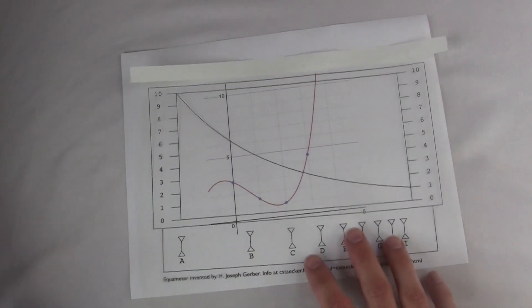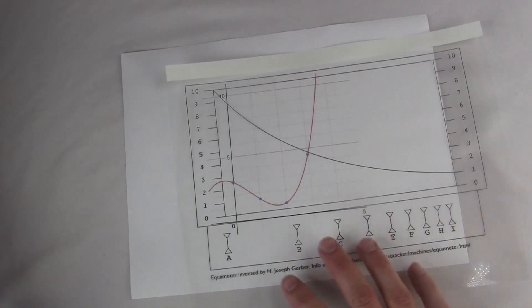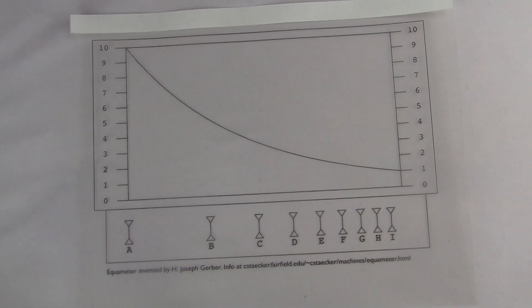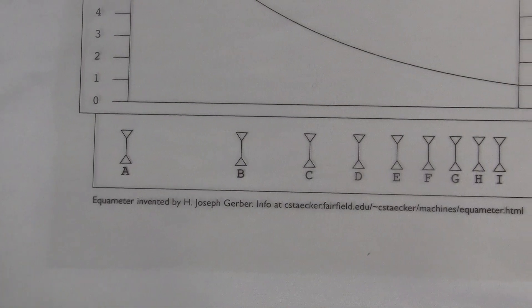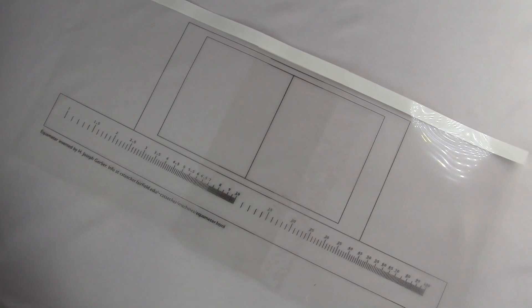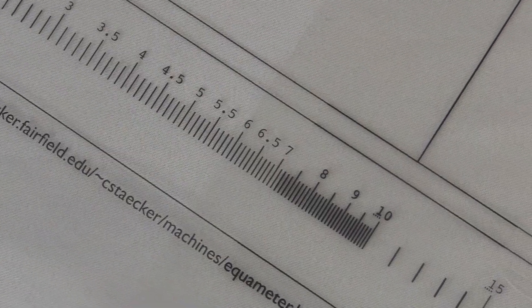Click on the link down there to print out your own. It has two transparent overlays. This is the curve sheet. It has this curve up here and nine marked indicators down here. And this is the scale sheet. It has just a line up here and a logarithmic scale on the bottom.